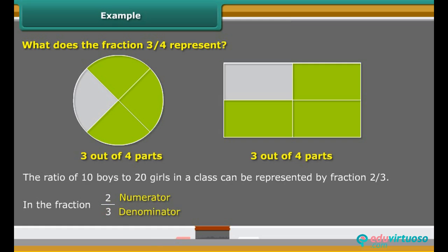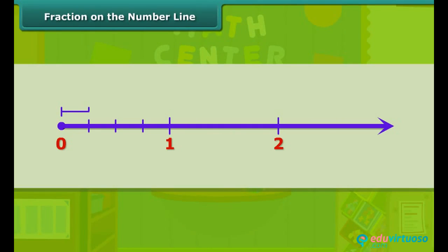Students, to represent the fraction on a number line, let us mark 1 upon 4 on a number line. It lies between 0 and 1. We divide the length between 0 and 1 into 4 equal parts and show one part as 1 upon 4.